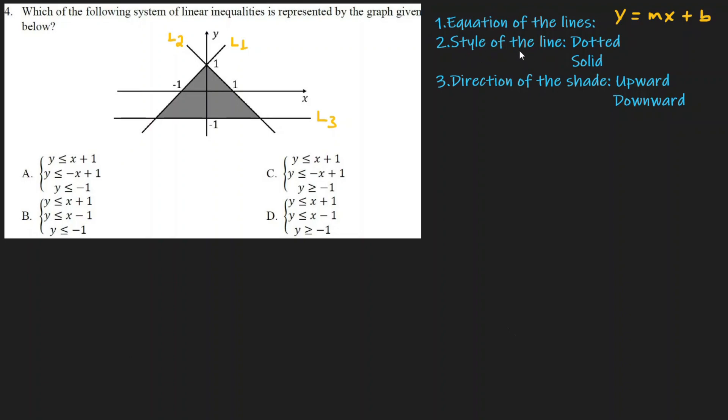First, identify the line style. If the line is dotted, the inequality is greater than or less than. If the line is solid, it's greater than or equal to or less than or equal to. Then look at the shaded region direction. If the shaded region is above the line, we have upward corner.